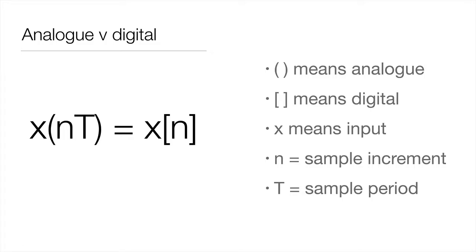X basically means it is an input. When you see X, you're seeing an expression of an input source. In this case, we're looking at the conversion from an analog signal to a digital signal, expressed mathematically. N represents the specific sample in our recorded digital signal. You can think of N as a series of incrementing numbers starting at zero: 0, 1, 2, 3, 4, 5, 6, 7... T is the sampling period — effectively the opposite of the sampling rate. So if the sampling rate is 44,100 Hz, you take 1 divided by 44,100, and that's the sampling period in seconds.